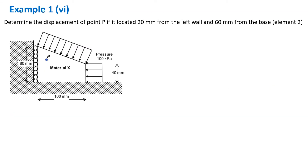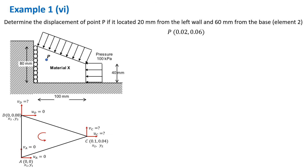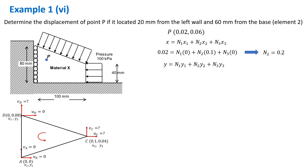The last slide shows an example of determining the displacement at any point within the element. We want to determine the displacement of point P, located 20 mm from the left wall and 60 mm from the base. From this information we determine the coordinates of point P. We then refer back to the element connectivity diagram of element 2 to obtain X1, Y1, X2, Y2, and so on, and use the available equations to determine N1, N2, and N3.